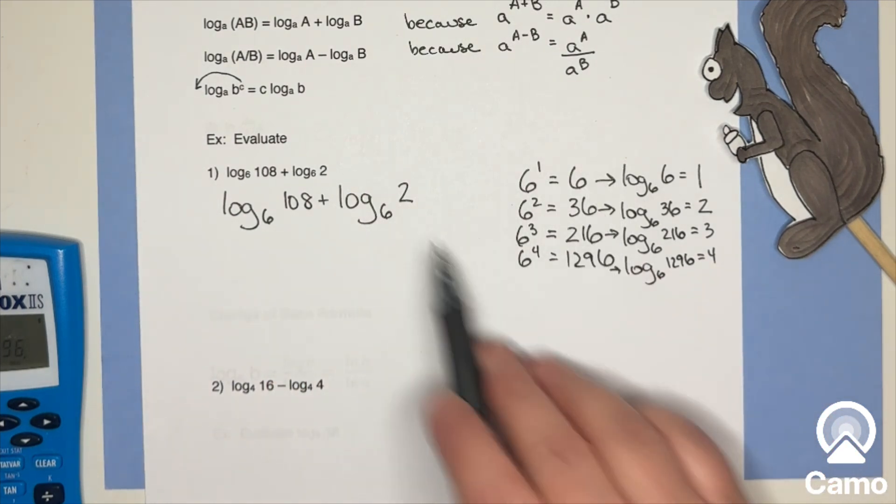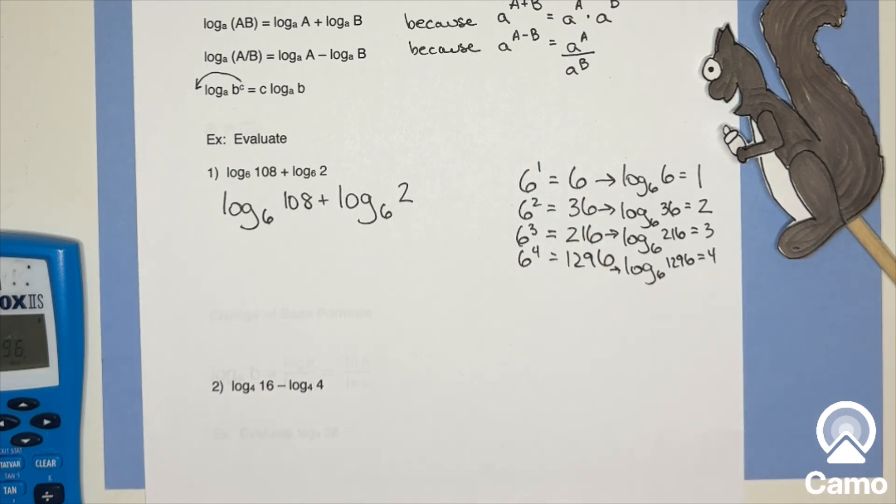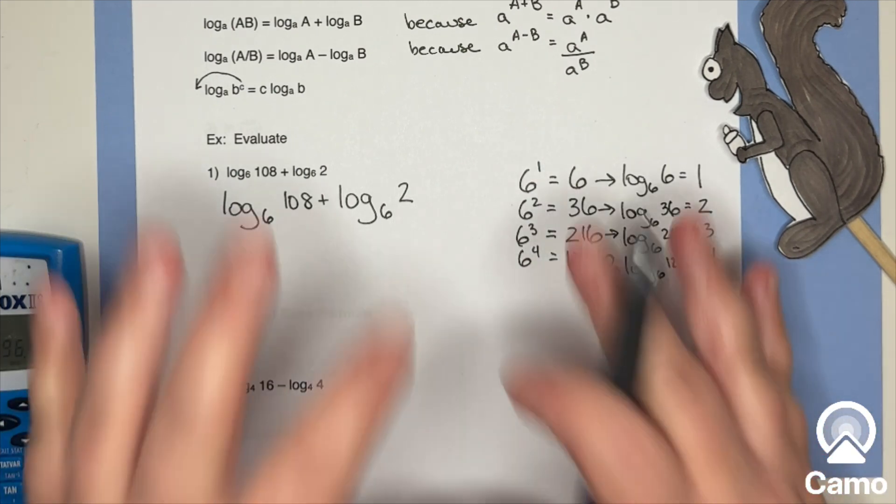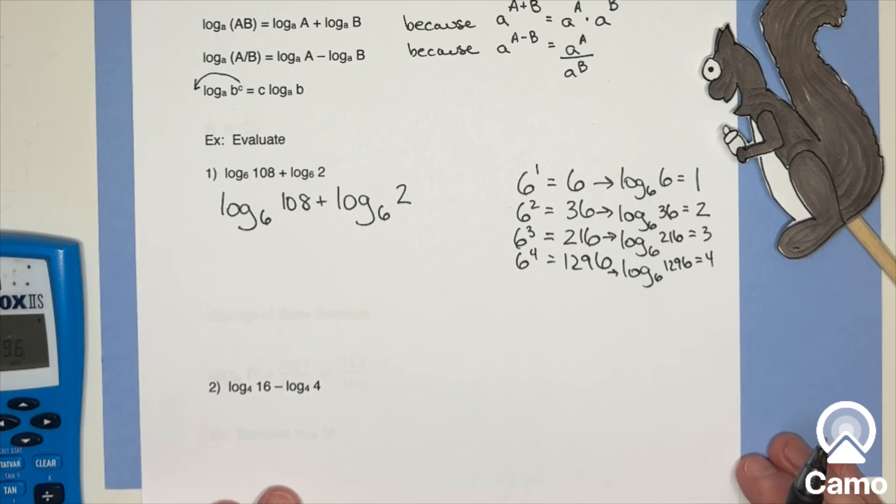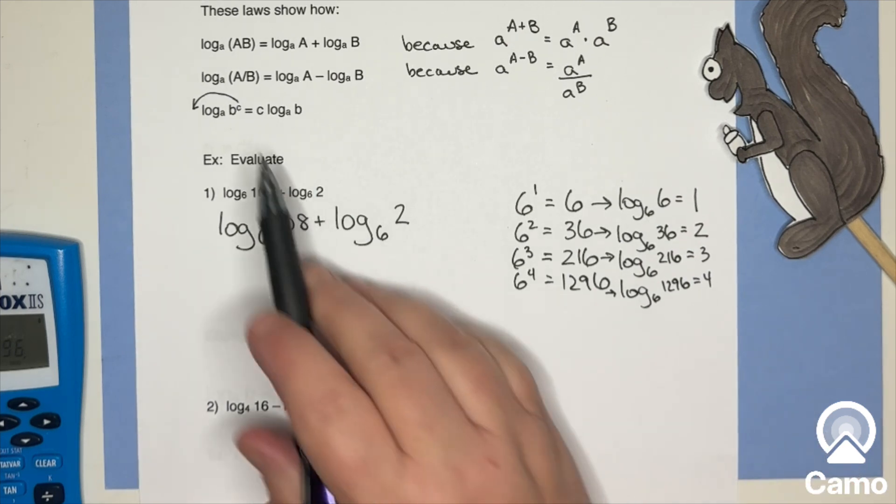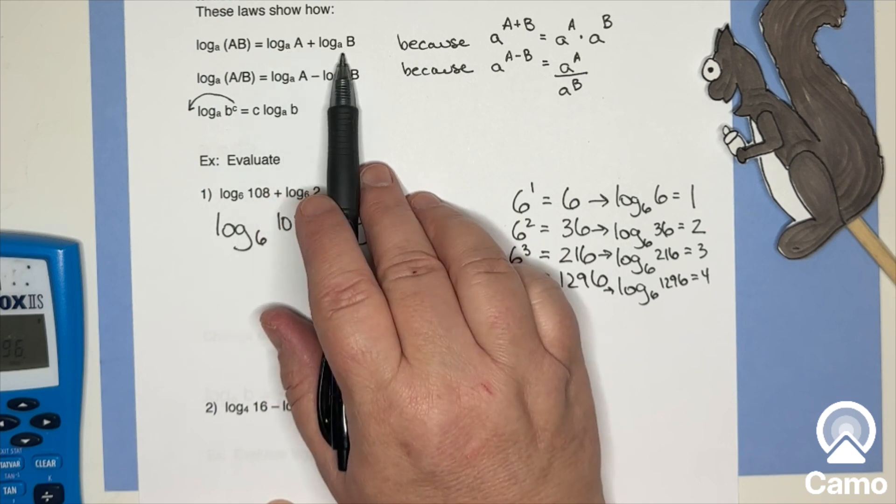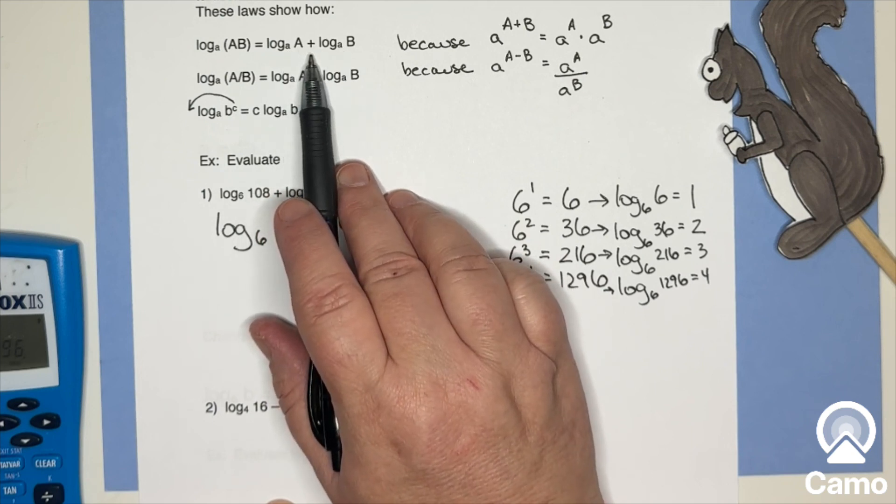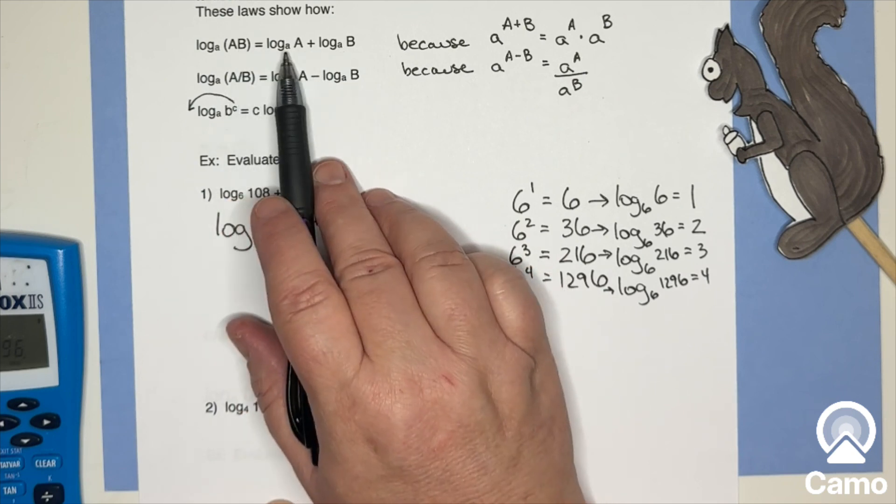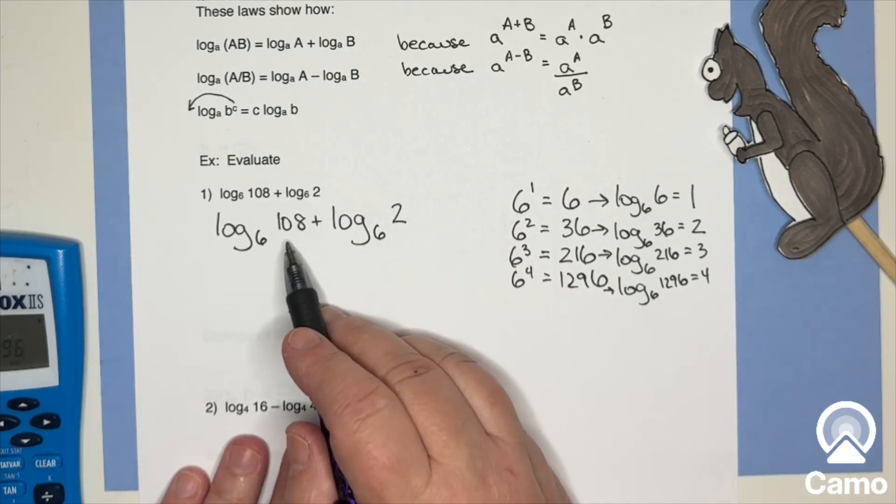108, nowhere on the list. Two, nowhere on the list. Which is really frustrating. It's like, ah, how do we do this? And the answer is, well, if I have two logarithms, and they have the same base, and I'm adding them together, I can just multiply those two arguments.